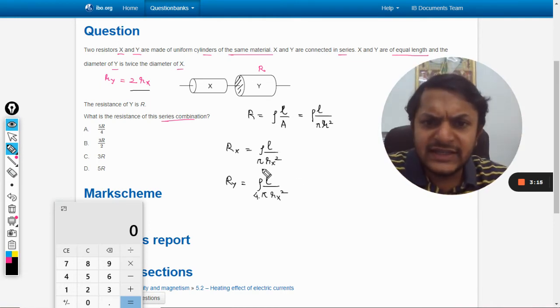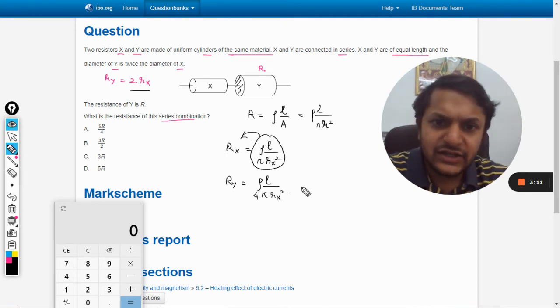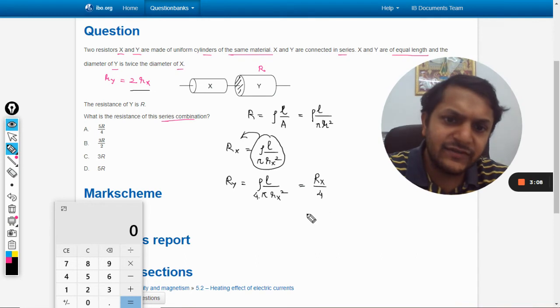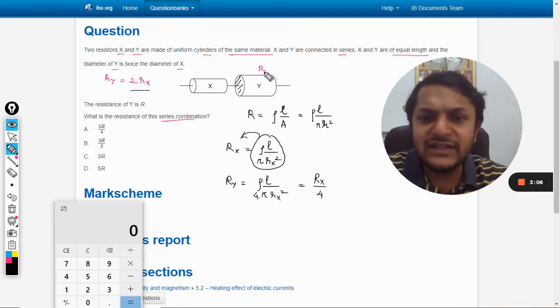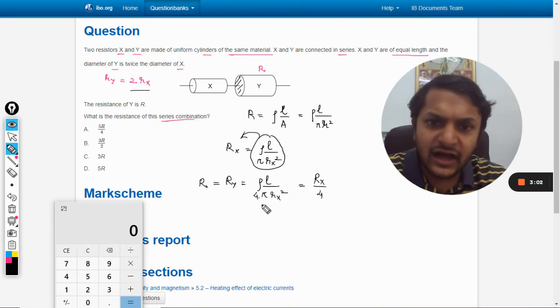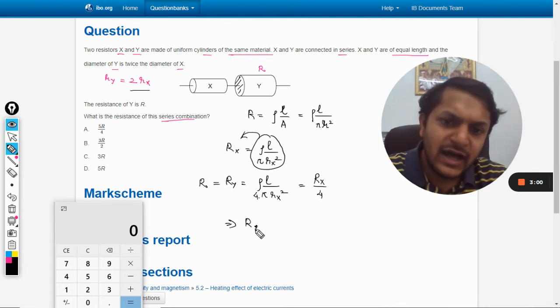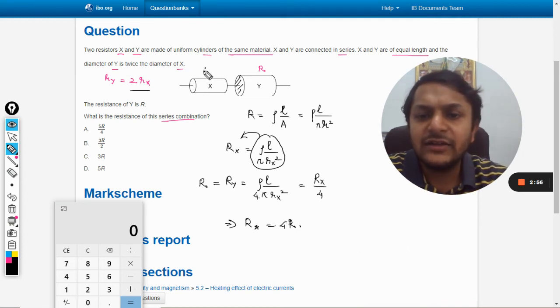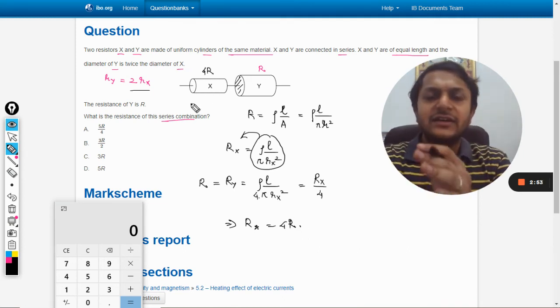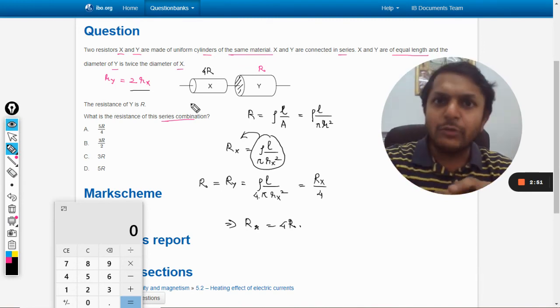If Ry is given as r, this implies Rx equals four times r. So obviously the resistance for the series combination will be the addition of the two, and it will become five r.